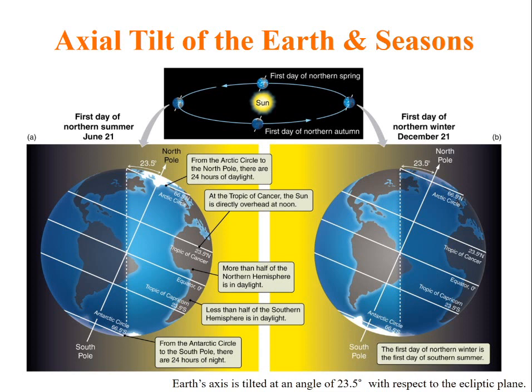On June 21st, the first day of northern summer, the sun is directly over the Tropic of Cancer. The North Pole has 24 hours of daylight and the South Pole has 24 hours of night.